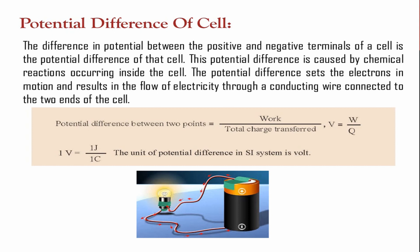The potential difference is caused by the chemical reaction occurring inside the cell — a chemical process which you will study in more detail in higher standards. The potential difference sets the electrons in motion. Due to potential difference, electrons flow, and when electrons flow, electricity is produced. The potential difference results in the flow of electricity through the conducting wire connected at both ends.